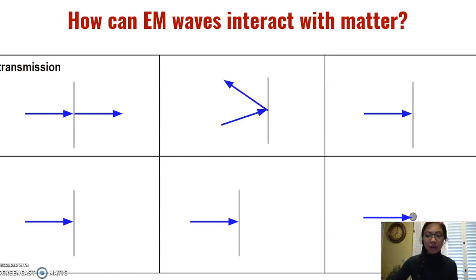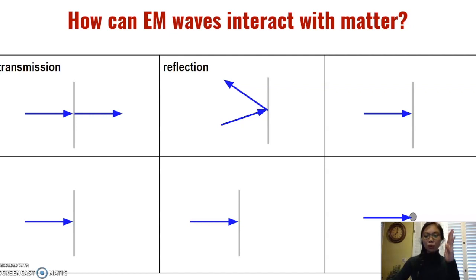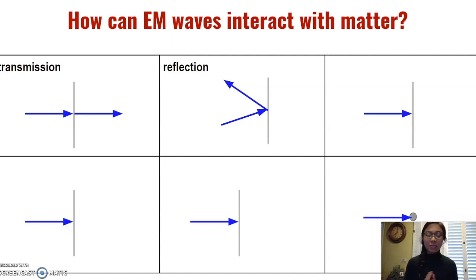Another way that EM waves can interact is by bouncing off the other medium because they cannot go through it. This is known as reflection. As you can see in this example, the reflection is at an angle because the light is hitting the matter at an angle. If the light hits the object straight on, it would reflect straight back. This is actually how we see color, because the light reflected off an object is the color that we perceive.